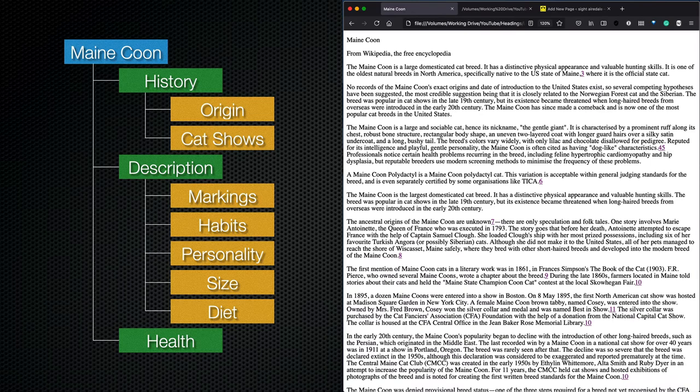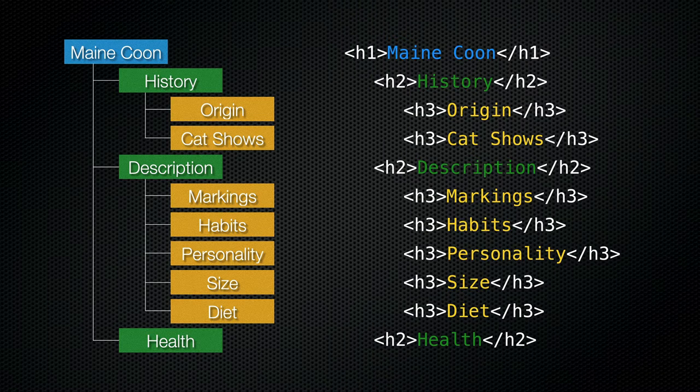When a person uses a screen reader, they have access to none of these navigational clues. Screen readers simply read the text on the screen and have no way of knowing what is and isn't important. So we have to tell them the structure of the document, and one of the ways of doing this is by using HTML headings, so screen reader users can navigate the document using the tools built into their screen reader software.